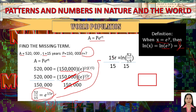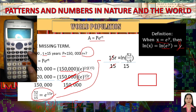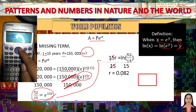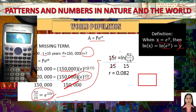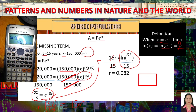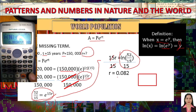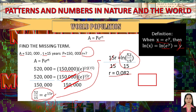To convert r to a percentage, multiply 0.082 × 100 = 8.2%. Therefore, the growth rate is 8.2%.